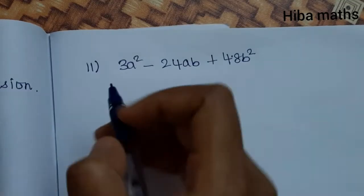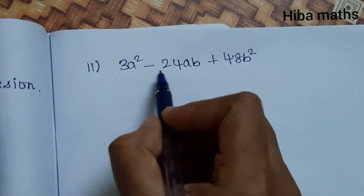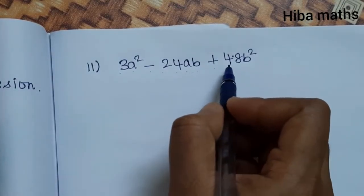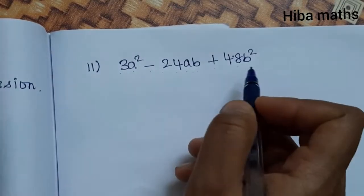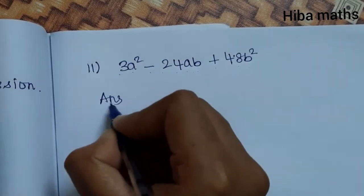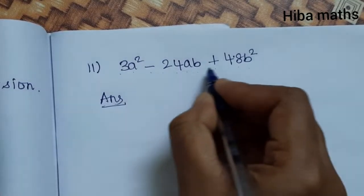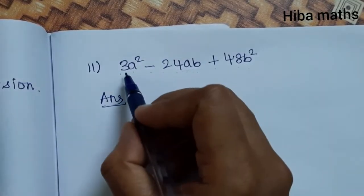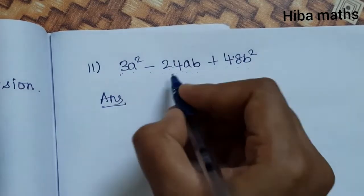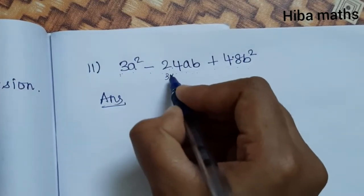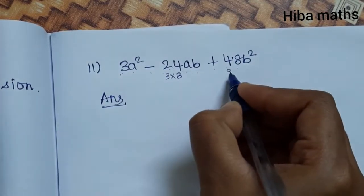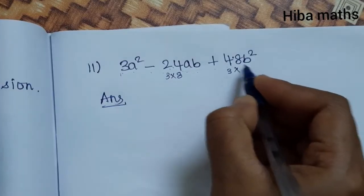Second question: 3a² minus 24ab plus 48b². First, we notice there are 3 as a common multiple. 3 goes into each term: 3×1=3, 3×8=24, and 3×16=48.